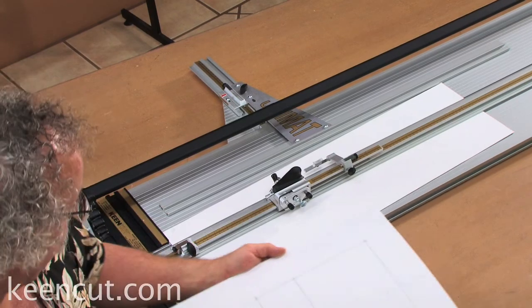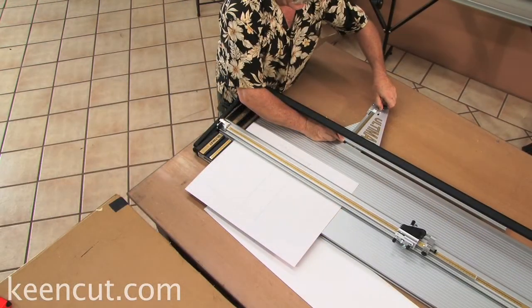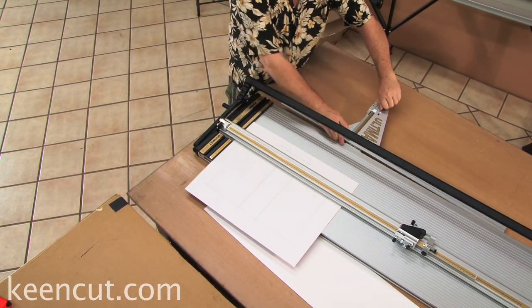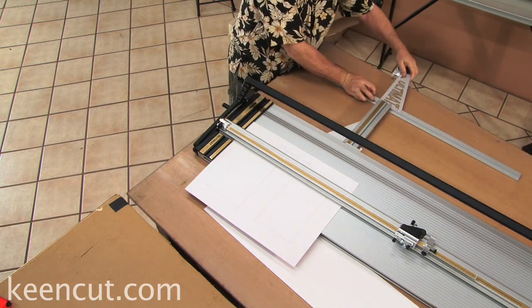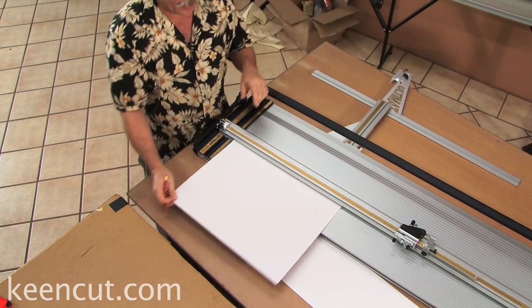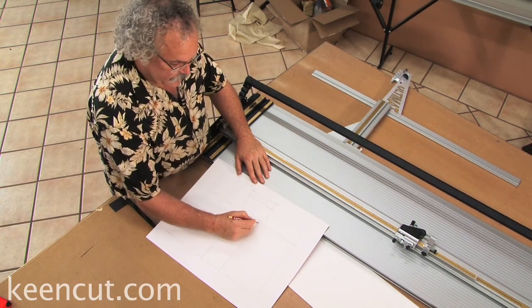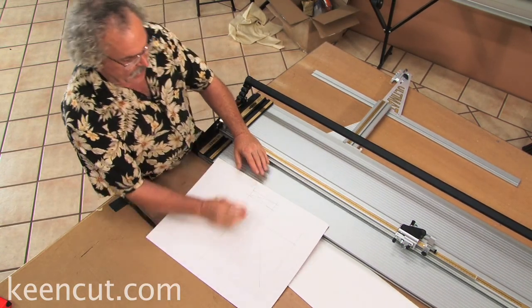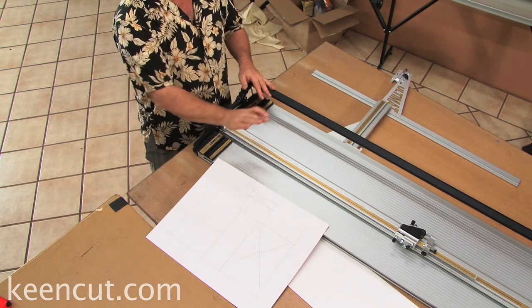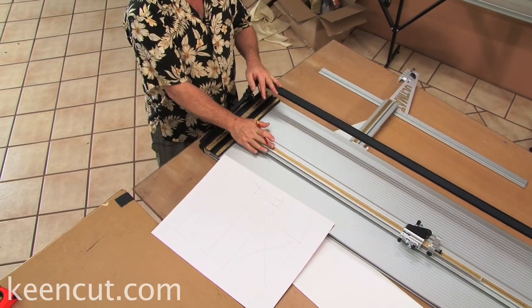Now that we've used our margin guide to help place our lines, we're going to X where we're going to cut out. And it's important to X where you're going to cut out because the X always has to stay to the right side of your cutter blade.